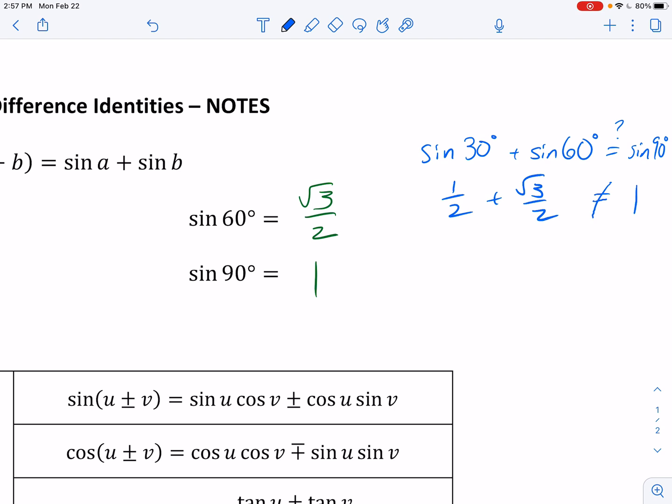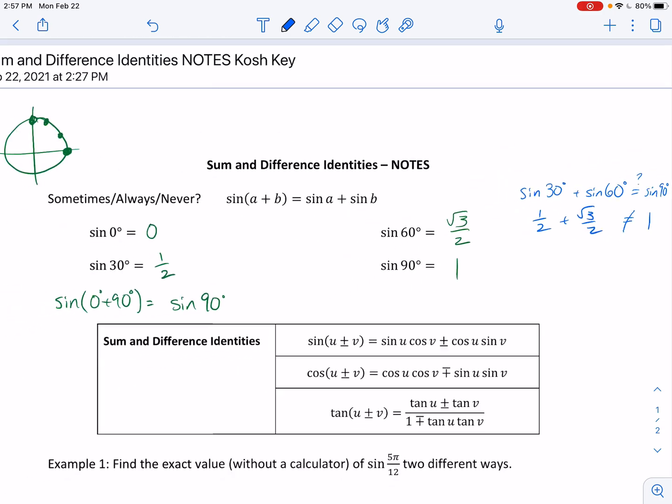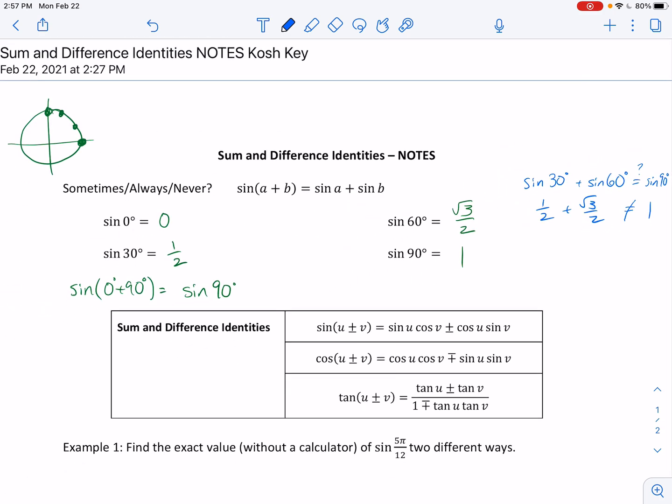We would, no, it's not equal. So this case right here, is it sometimes, always, or never true? I'm going to say it's sometimes, but maybe what we really should have said is that it's rarely true.